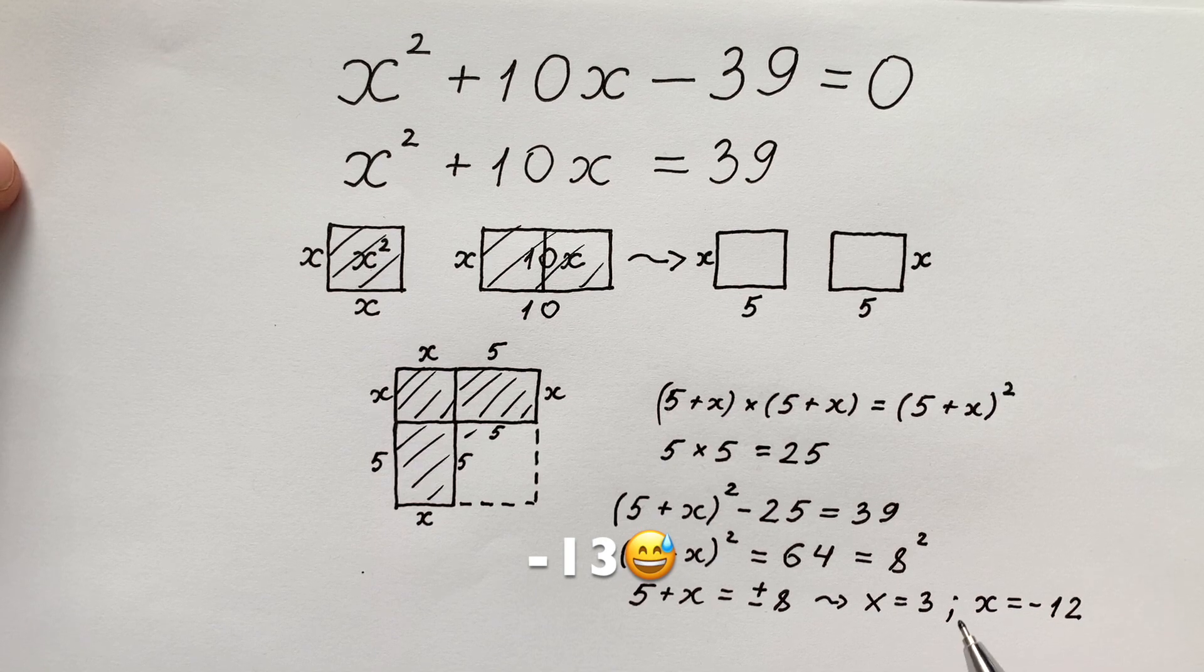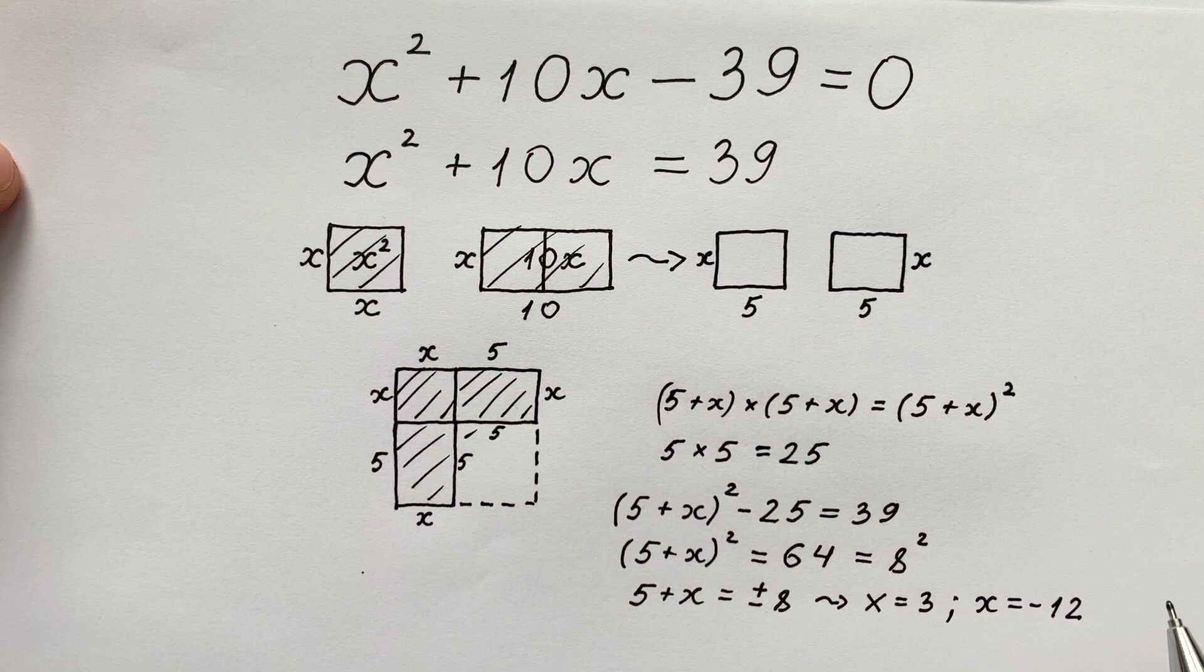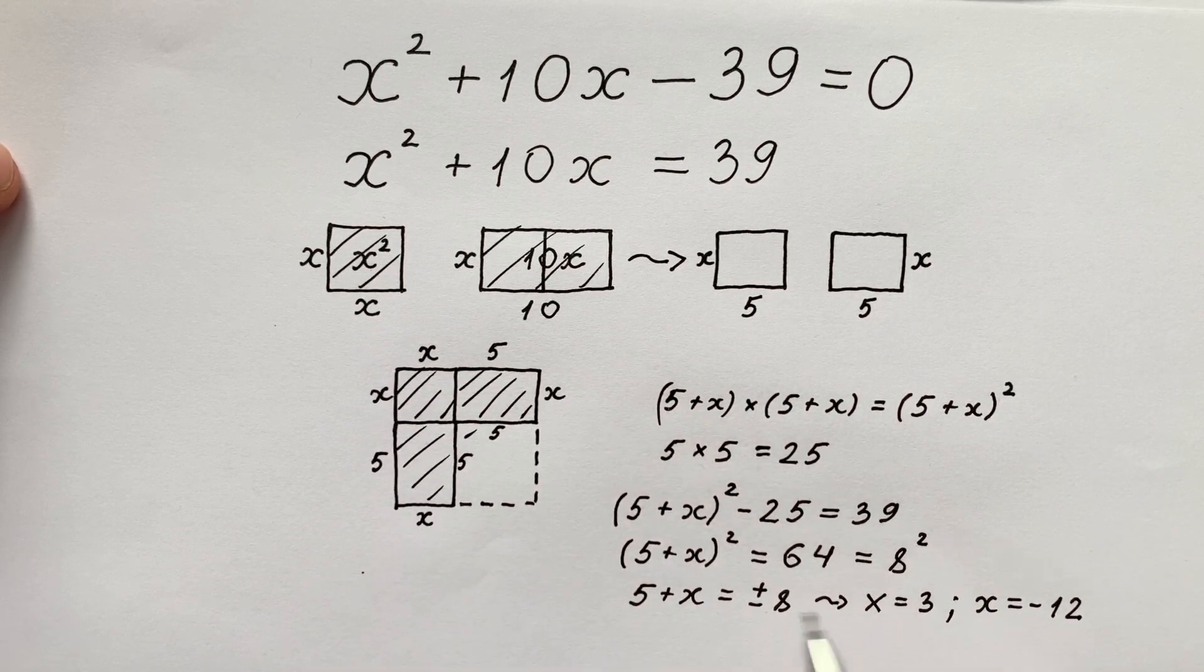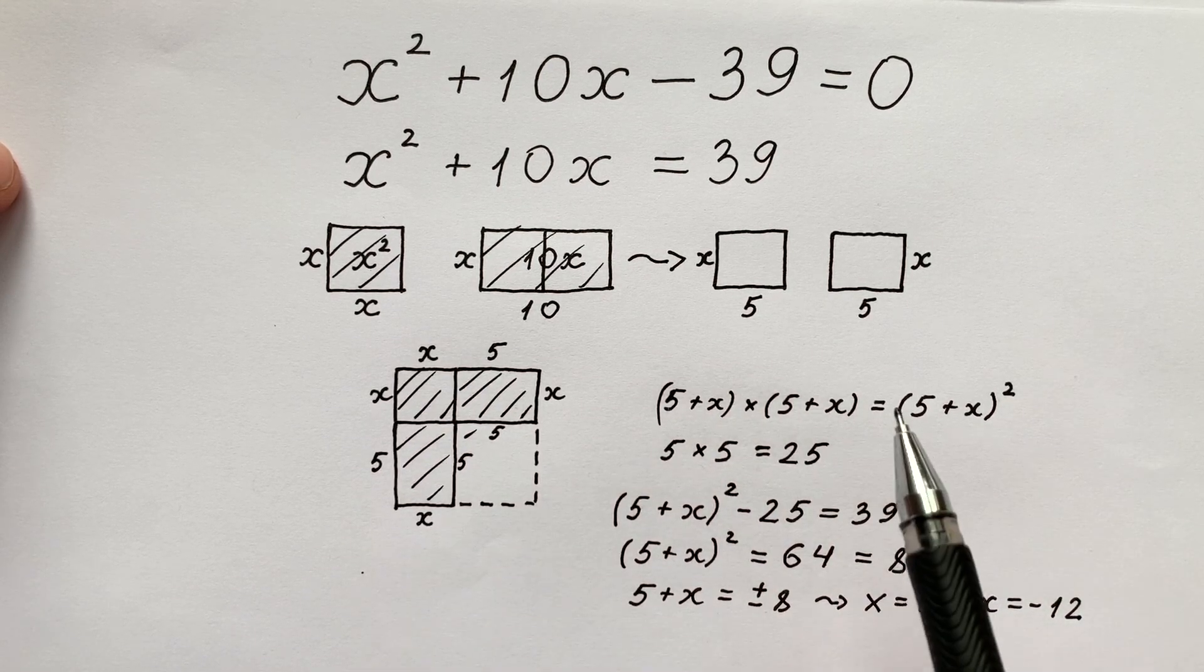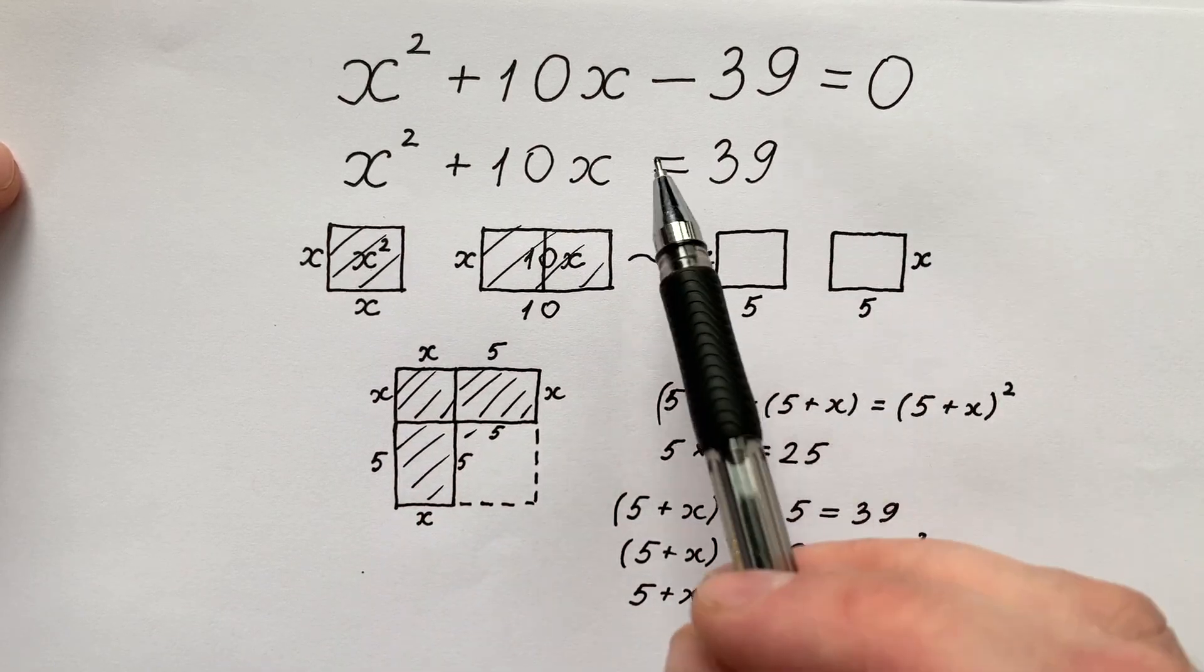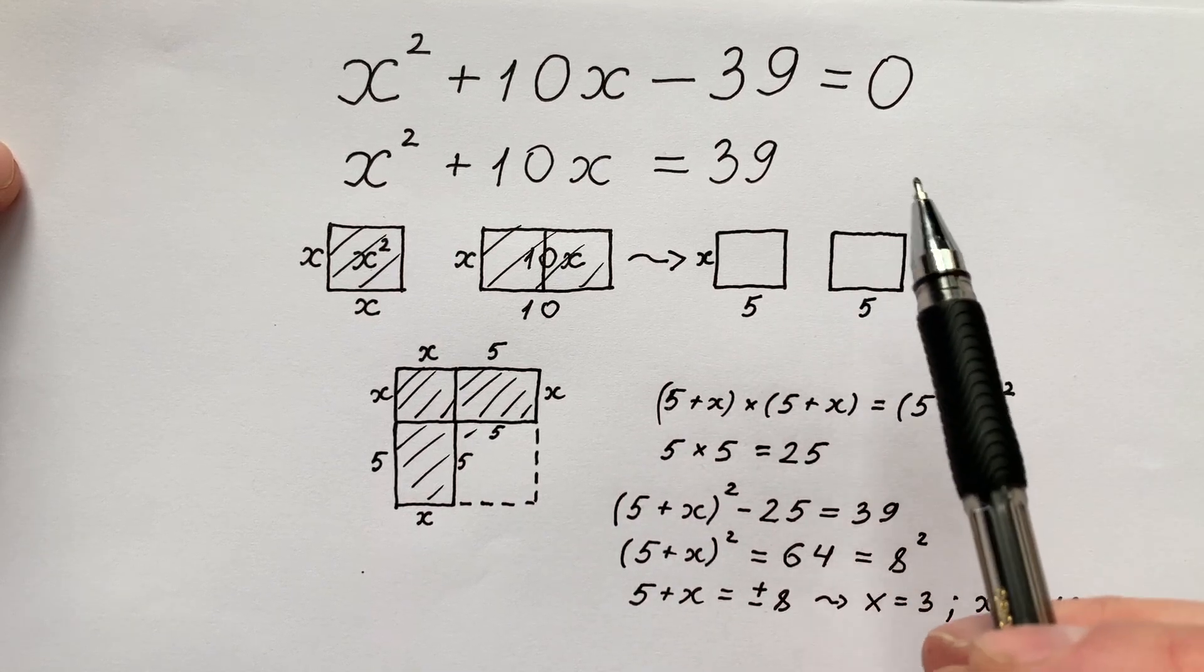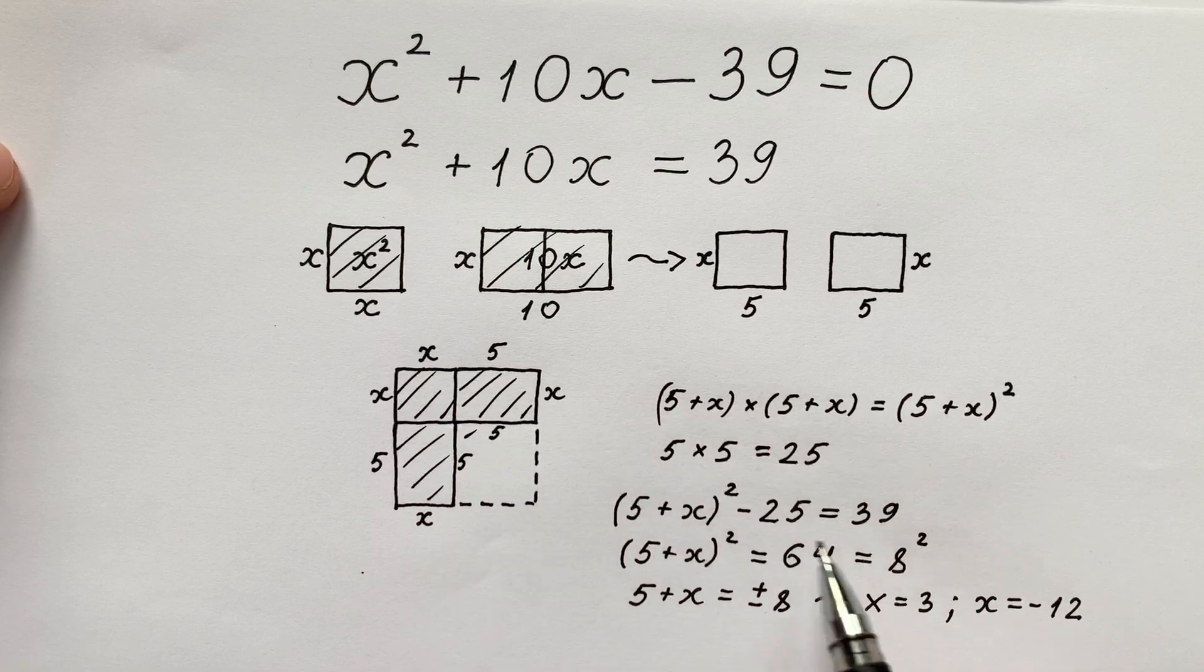If we really want to build a storage, the second x equals to minus 12 is not our solution because length can't be less than 0. So if we want to build a storage x equals to 3 is our solution. But we can remember that at the beginning of our problem there were no conditions about x. Nobody told us that x is bigger than 0. So we can use this trick to solve the equation.